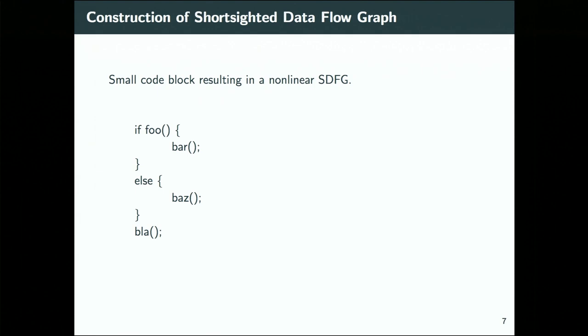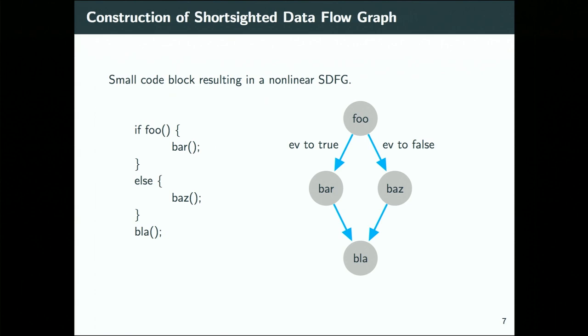How do we construct short-sighted data flow graphs from the ASTs? Looking at a simple code block, there are two possible execution paths: from foo to bar to blah, or from foo to baz to blah. To construct the SDFG we take both paths and merge them together, resulting in a diamond-shaped directed graph — naturally directed because we're looking at execution paths through the code.